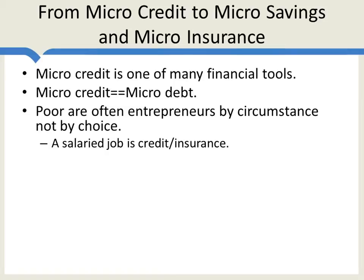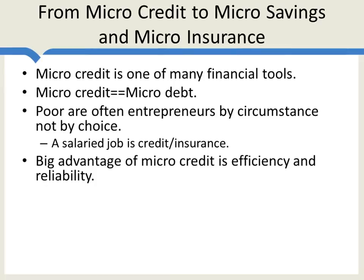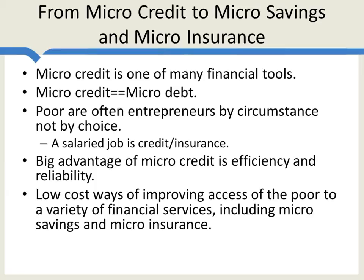What people really want is a salaried job. Consider how difficult your life would be without a regular job. The thing about a regular job is you can go to work, have a bad day, not get a lot done, and at the end of the week you still get paid. So a salaried job is a great form of insurance — it's a type of credit and insurance in and of itself. Now the big advantage of microcredit has been in efficiency and reliability. The poor by and large can trust microcredit institutions to work — not always, there have been some instances of corruption, but by and large the system works and it's low cost.